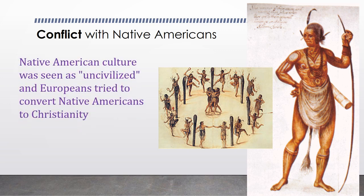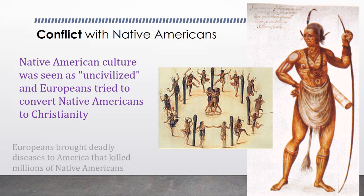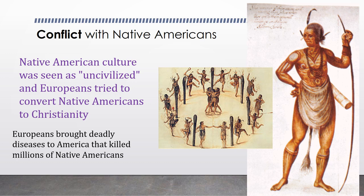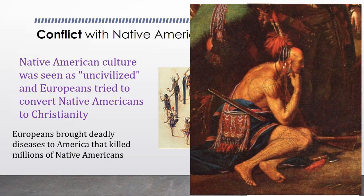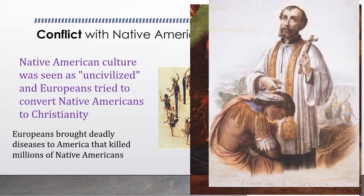Another thing that caused conflict between the Europeans and Native Americans was their differences in religion and culture. Native American culture was seen as uncivilized, and Europeans tried to convert Native Americans to Christianity. When John White came over to Virginia as an artist to sketch pictures of what the New World looked like, he showed the Native Americans as almost looking like animals and displayed their foreign ceremonies that would have been shocking to people back in Europe. Europeans brought deadly diseases to America that killed millions of Native Americans, and they made it their mission to change the Native Americans into European-type people — giving up their foreign religions to join Christianity, which they believed was the only way to heaven.